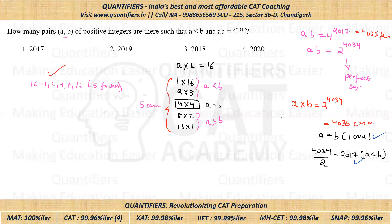So what would be the answer? The answer would be 2017 plus 1, which is 2018. That means there are 2018 cases when A will be either equal to B or less than B. I hope you have understood this very important concept. Thank you, everyone.